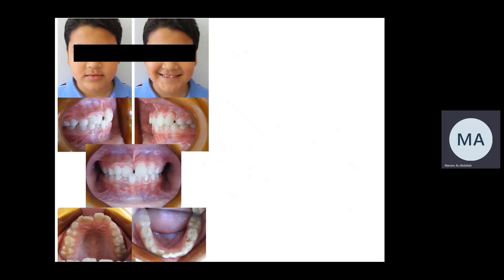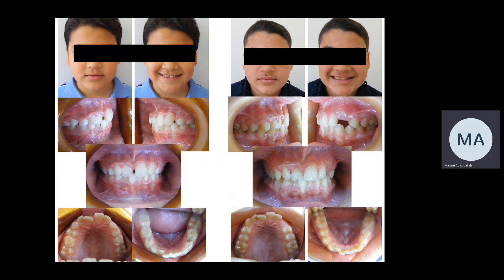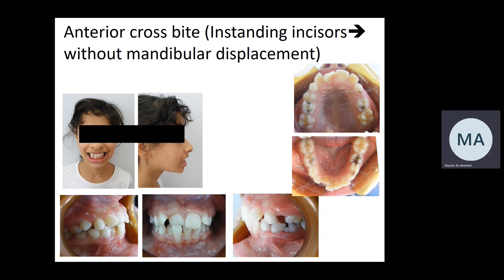Here is an example of a patient with anterior crossbite who presented in the mixed dentition. Treatment was a removable appliance with a Z-spring to correct the crossbite on the upper right central incisor. Unfortunately, the patient never came back and returned in the permanent dentition, showing the consequences of no treatment: gingival recession on the lower incisor, attrition on the labial surface of the upper incisors, mobility, and risk of root resorption.